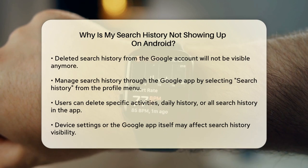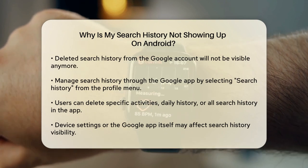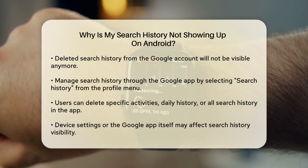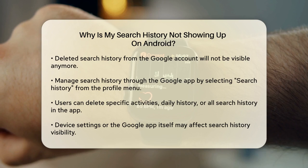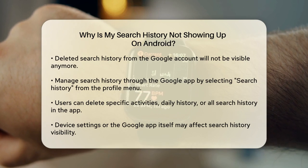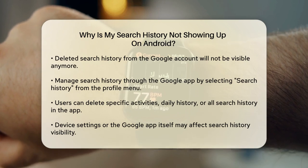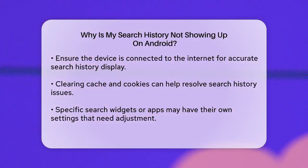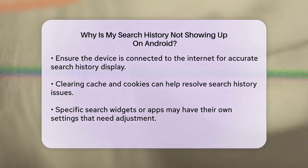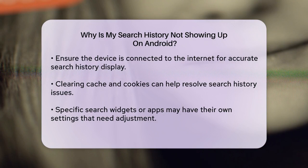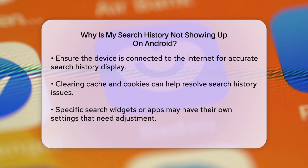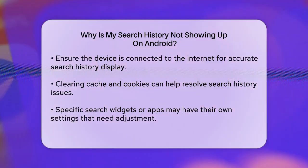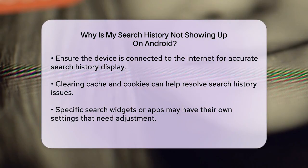Sometimes the issue could be related to your device's settings or the Google app itself. Ensure that your device is connected to the Internet, as deleted history might still appear on a device that's offline until it connects to the Internet. Also, clearing your cache and cookies can sometimes resolve the issue. If you're using a specific search widget or app, there might be settings within that app that need to be adjusted.